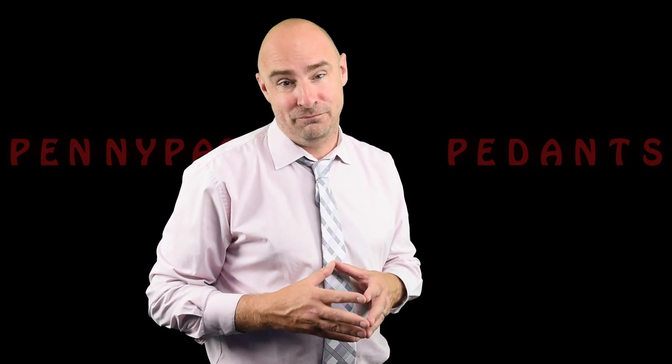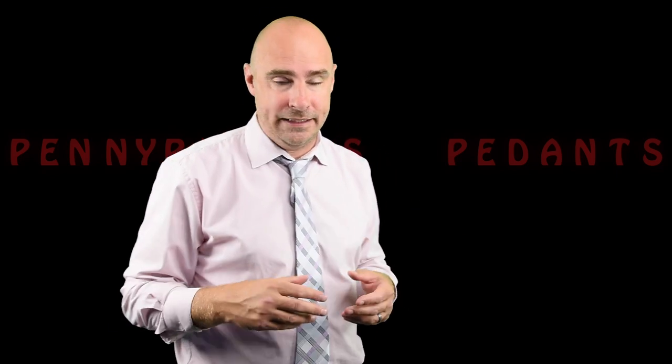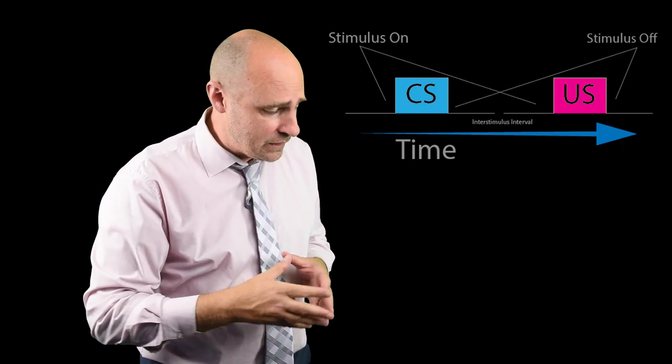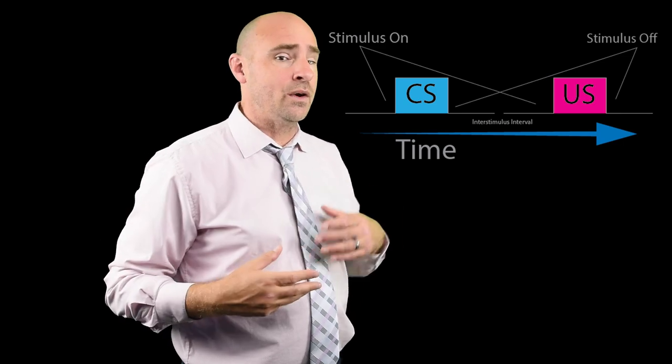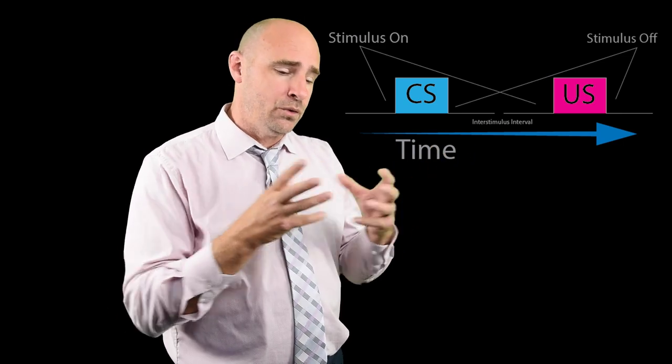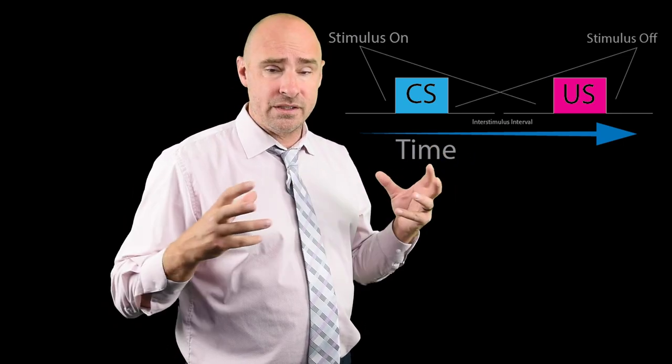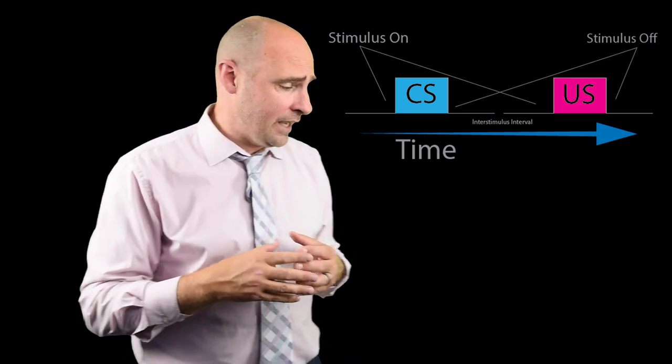So classical conditioning, where we need to present the CS and then the US, right? So the CS is going to predict the US, and that's how you end up developing a connection between the CS and US and you end up with conditioning. Okay, here we go.